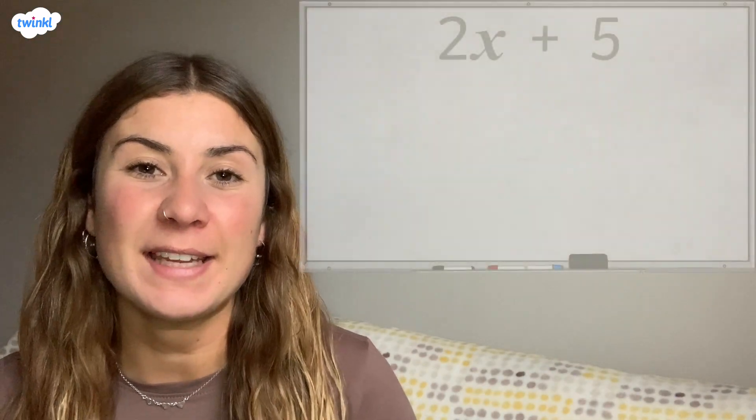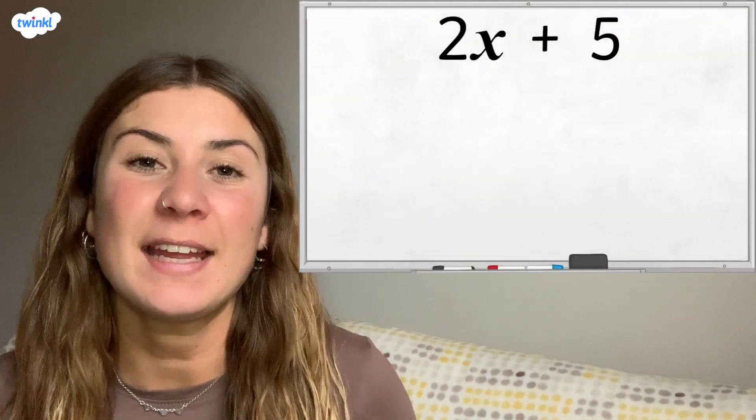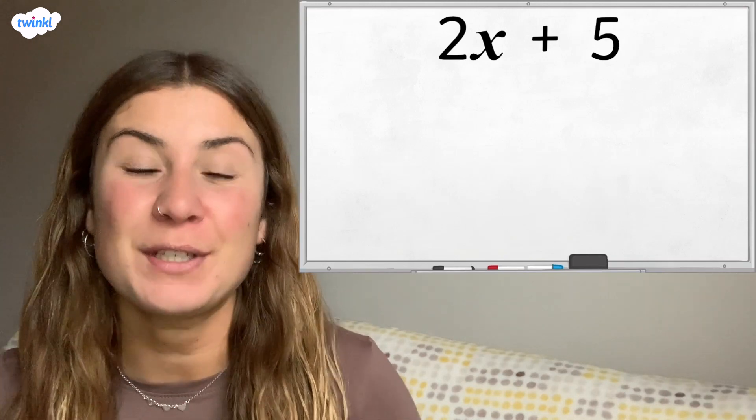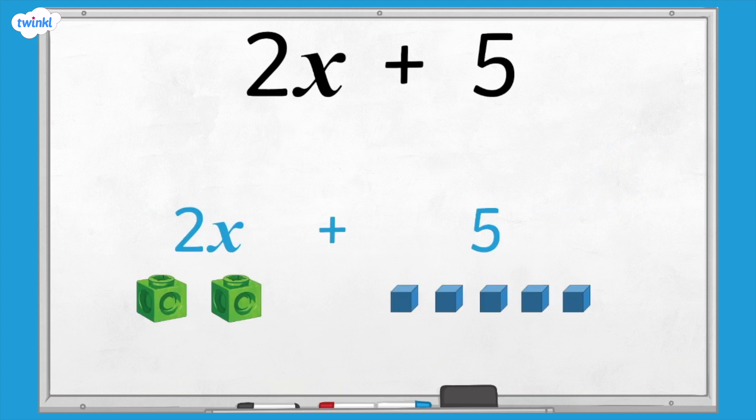How would you represent the expression 2x plus 5? Pause here and think about how many of each cube you would use. If you have cubes you could create the expression too. How did you get on? We should have two interlocking cubes, one for each lot of x, and five ones cubes.